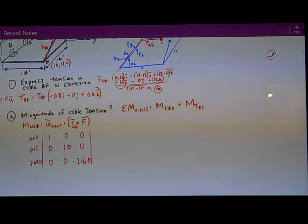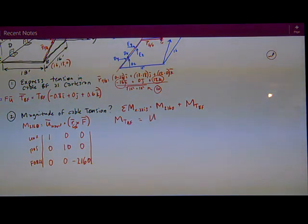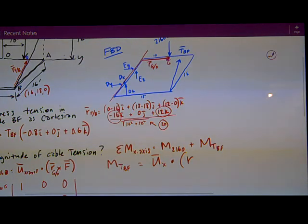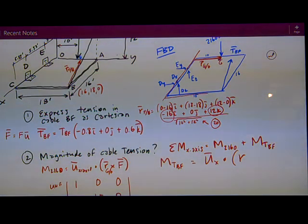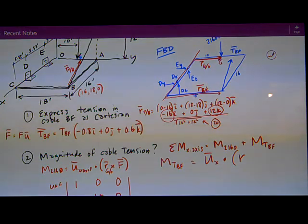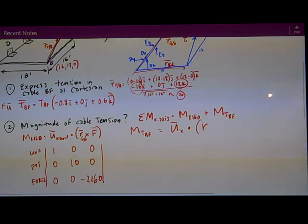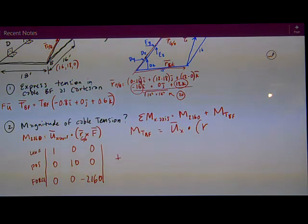The other thing that creates moment is the tension in the cable. And that's MTBF, as I've called it, the moment caused by the cable. That's the same unit vector, U of x-axis, dotted with R cross F. This time I'm going to use a position vector from this point C to point B, like right here, which we would call B over C. And it's just in that Y direction, 18 units. So my matrix looks very similar.